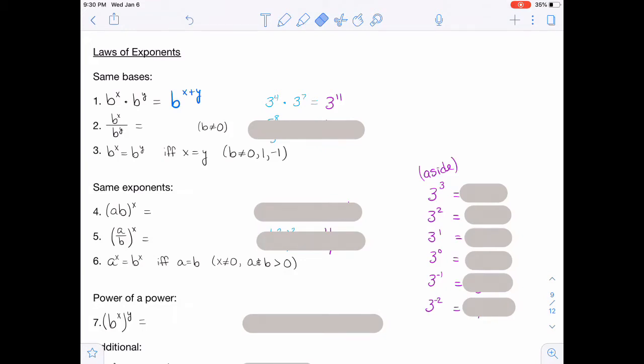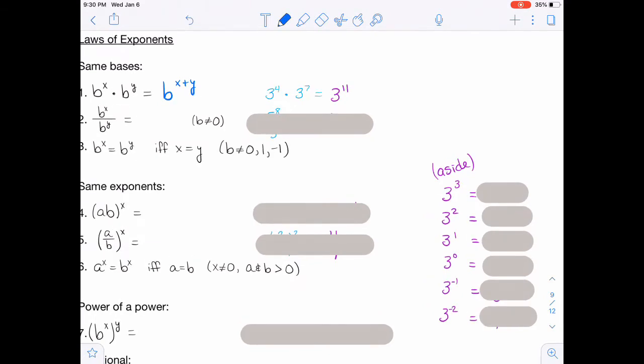For number two, the rule here is that you subtract the powers. So that's going to give you b to the x minus y. So as far as a numerical example, I have 5 to the eighth over 5 squared, and that gives you 5 to the sixth.